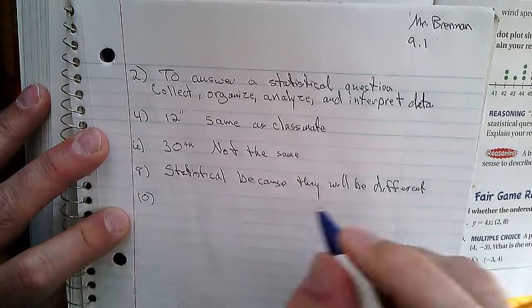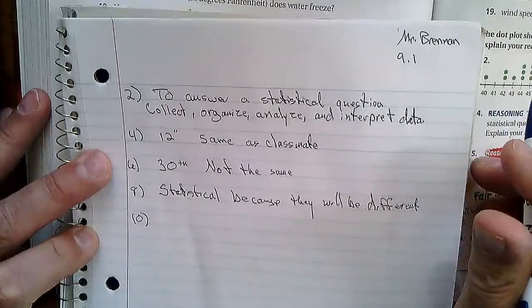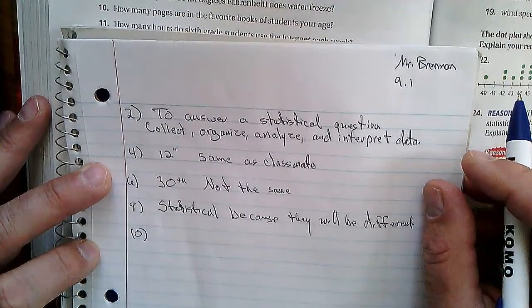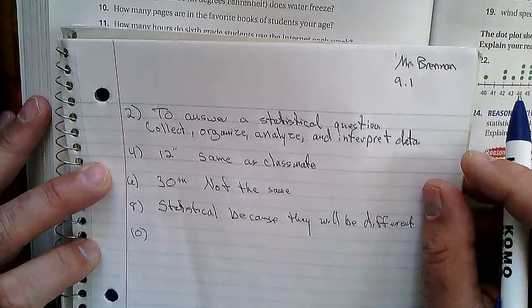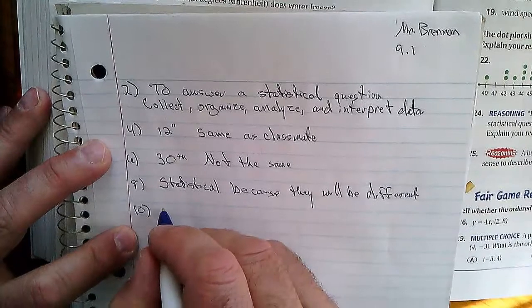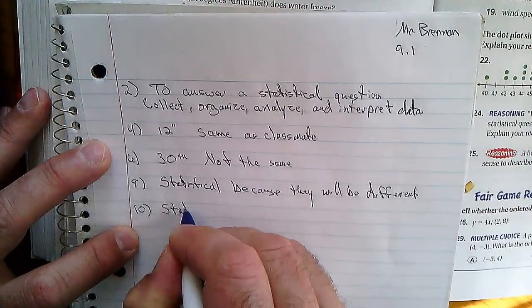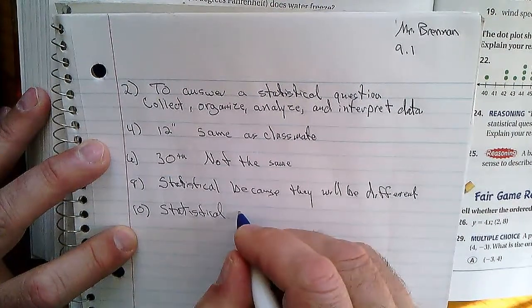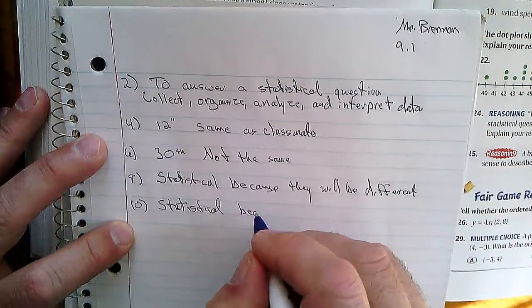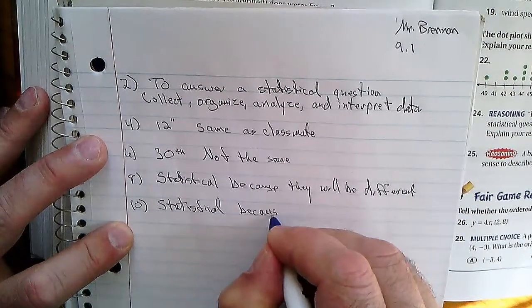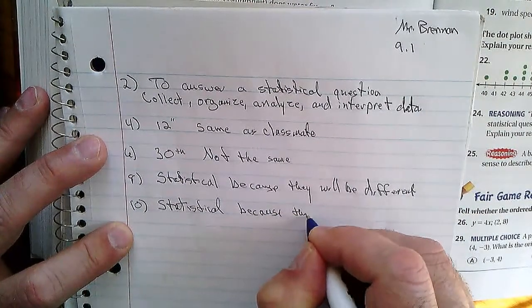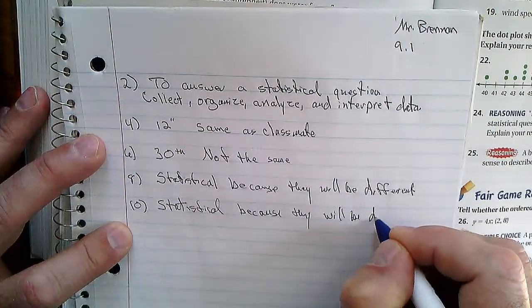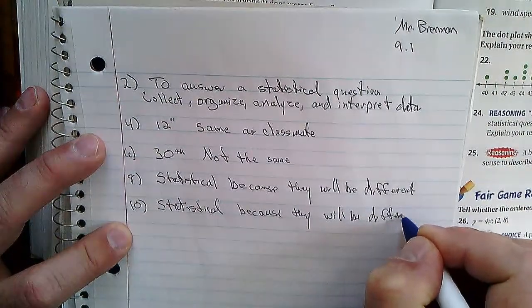Number ten: how many pages are in your favorite books of students your age? That also is statistical. Why? Because they will be different. You're going to get lots of different answers to a question like that.